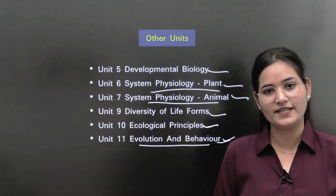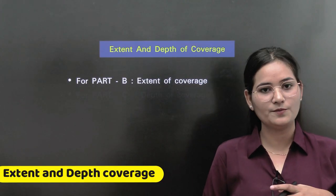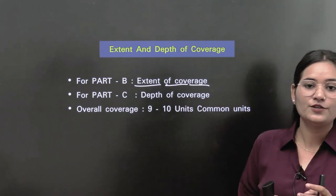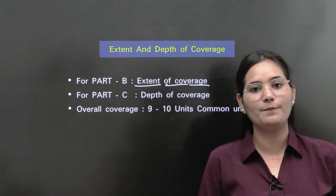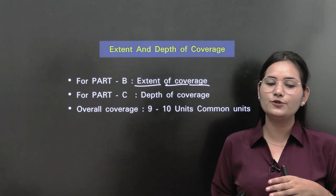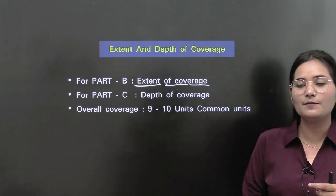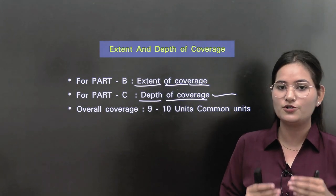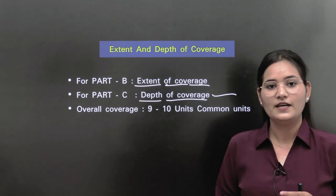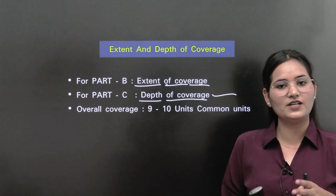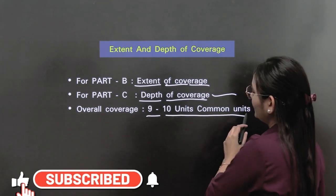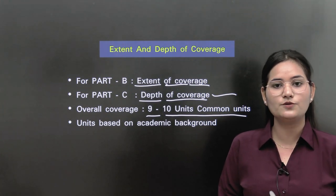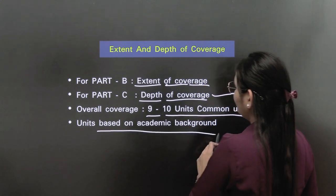Regarding extent and depth of coverage: for Part B, extent of coverage is more important because questions are informative in nature — the more information you gain, the better you can cover Part B. For Part C, depth of coverage is more important because questions are long-type requiring deep knowledge. Overall, you need to target at least 9 to 10 units to qualify CSIR. Choose units that were part of your academic background — it will be beneficial.